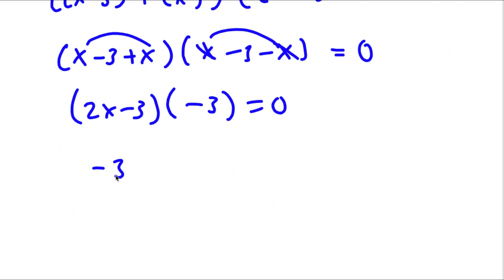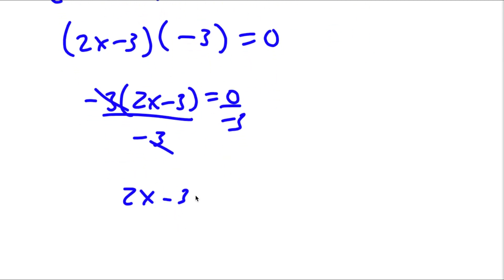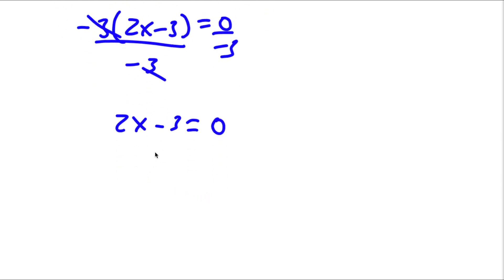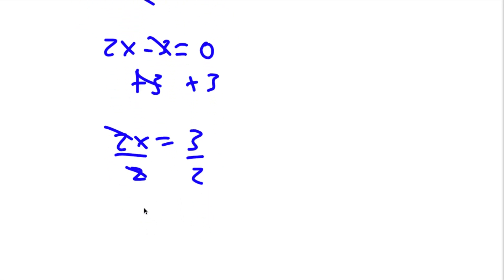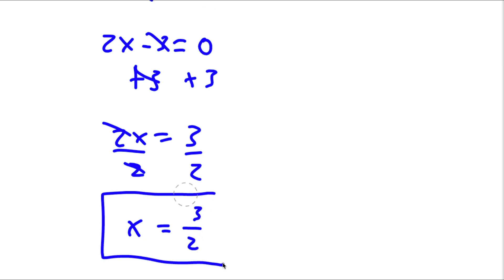We can rewrite this as negative 3 times 2x minus 3 is equal to zero. Now if I divide both sides by negative 3, these two cancel out, and I'm left with 2x minus 3 is equal to zero. I can add 3 on both sides so these two cancel out, and I'll have 2x is equal to positive 3. And now if I divide by 2 on both sides, I'm left with x is equal to 3 over 2. So that is our value of x.